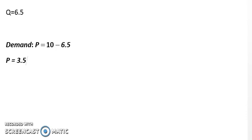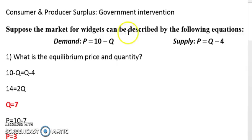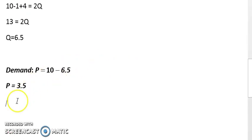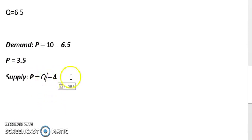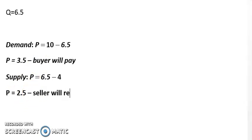For the supply at 6.5, the price for the seller will be 2.5. Not 1.5, but 2.5. So the buyer will pay 3.5 and the seller will receive 2.5.